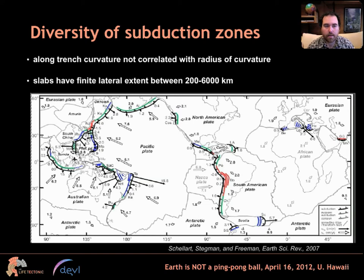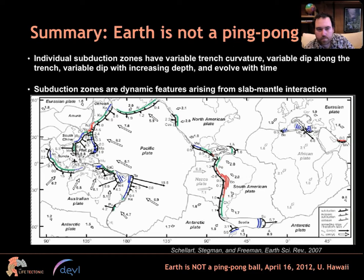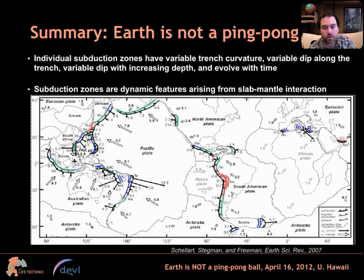To summarize these observations: each subduction zone is an individual with a lot of along-trench variation in curvature, dip angle, and how it evolves over time. It's not a static feature. Because subduction zones are dynamic features, they arise from slab-mantle interaction — that's where we need to look to find the real explanation.